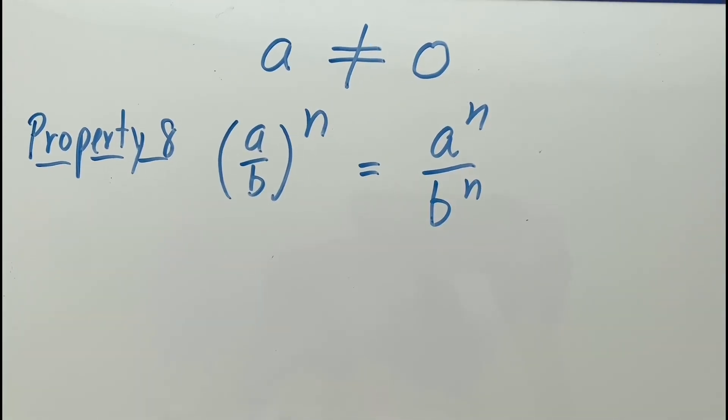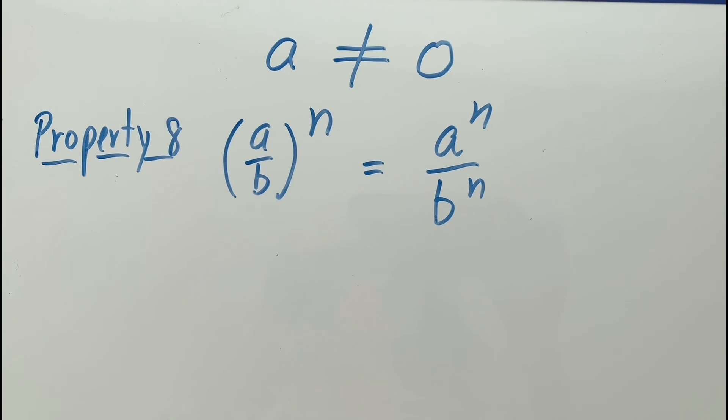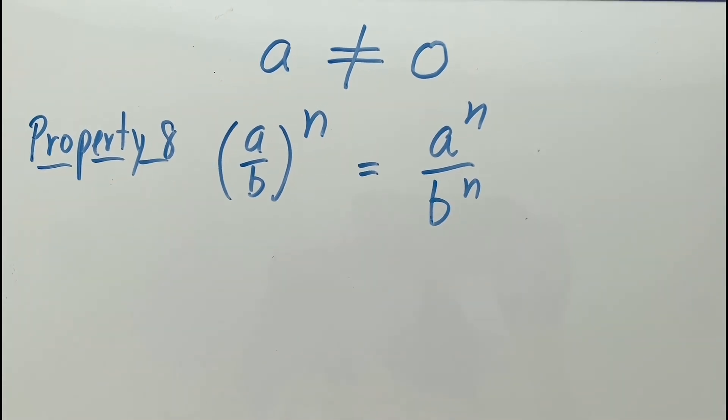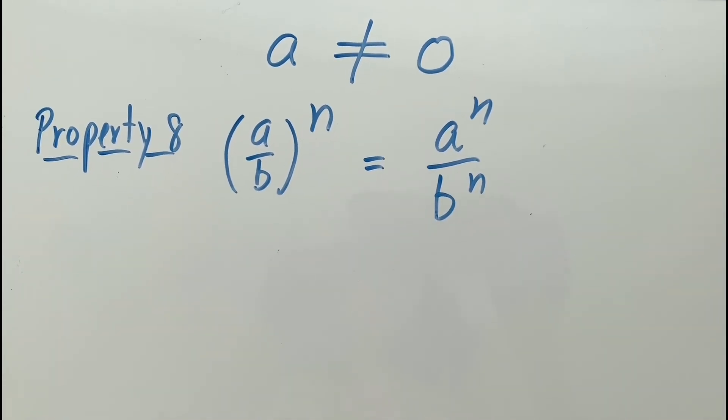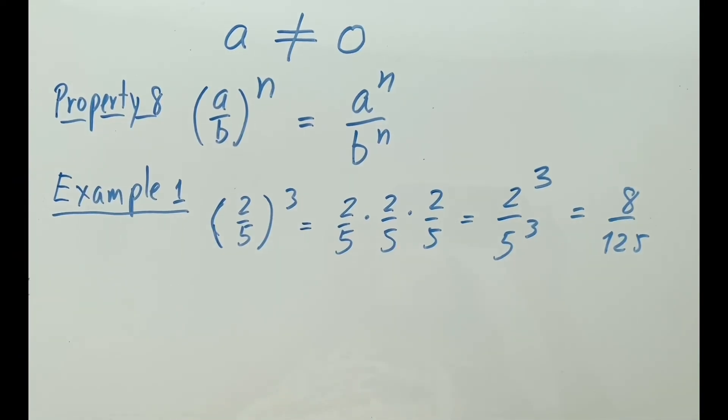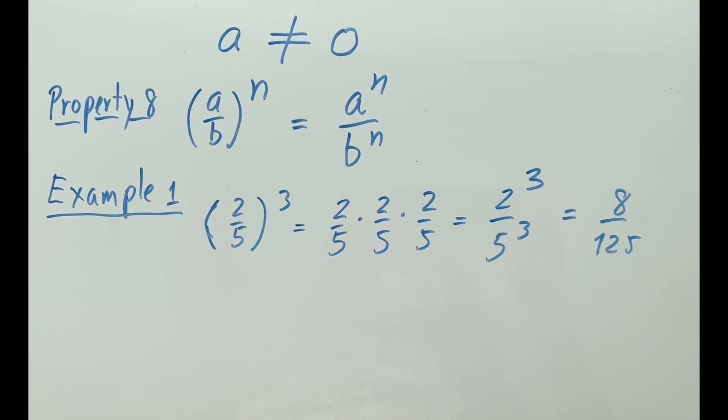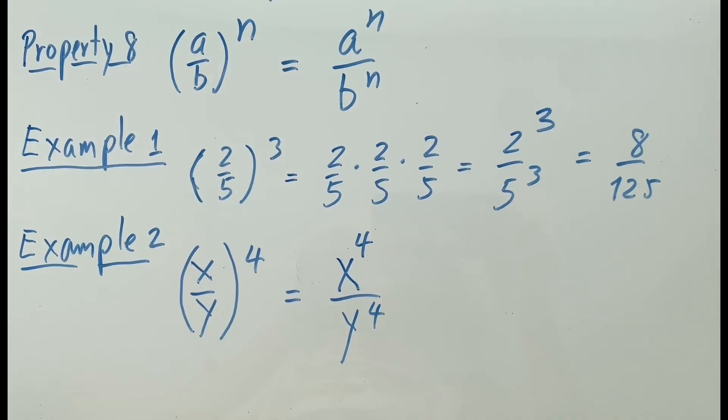Property 8: we can take the quotient first, then the power or each power followed by the quotient. Example 1, example 2,